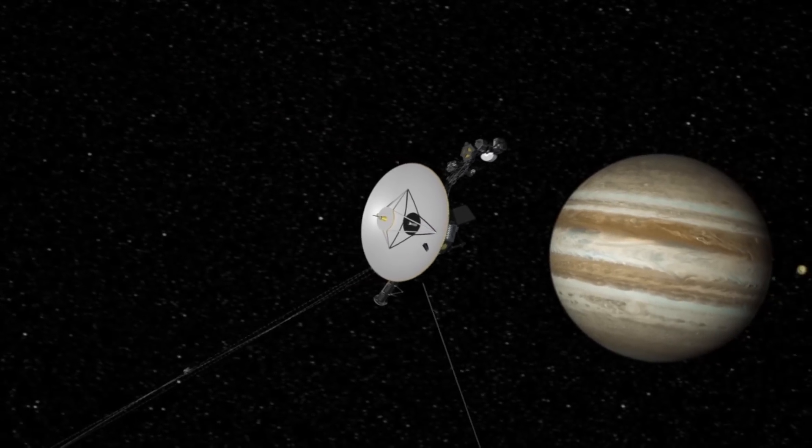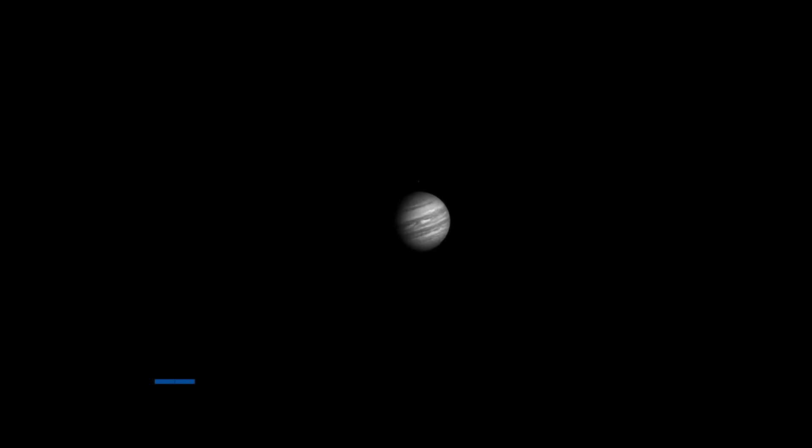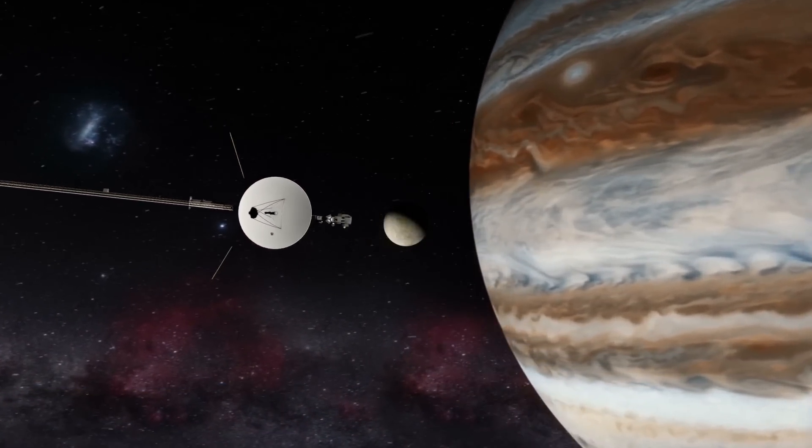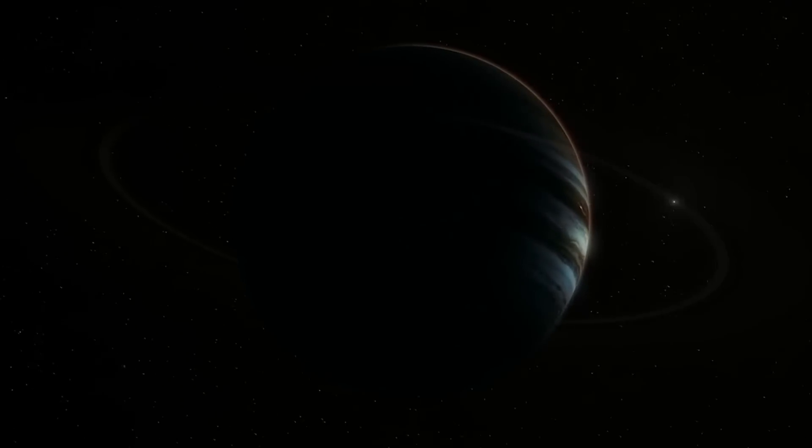Voyager 1 completed an outstanding 100-hour stint in January 1979, capturing 3,750 images of Jupiter's rotation to create a time-lapse movie showing 10 of the planet's spins. In February 1979, it passed through the Jovian moon system, and a month later discovered the little ring surrounding Jupiter.